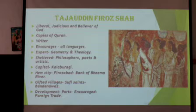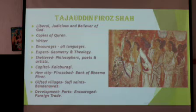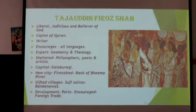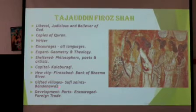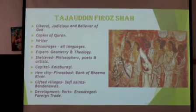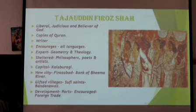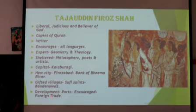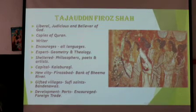During the rule of Tajuddin Feroz Shah, the capital was Kalaburagi. He also established a new city called Ferozabad, named after himself, located on the bank of the Bima River. He gifted villages to the Sufi saint Bande Nawaz in recognition of their contributions. He also developed ports and encouraged foreign trade, as ships were the main means of trade with other countries at that time.